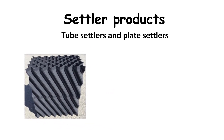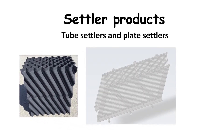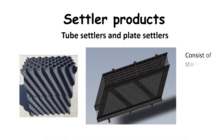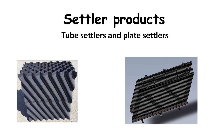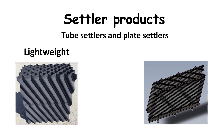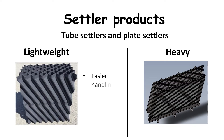Plate settlers in comparison usually consist of stainless steel plates which are assembled into large modules. Therefore, tube settlers have the advantage of being lightweight compared to plate settlers, which makes their handling much easier, especially during transportation and installation.